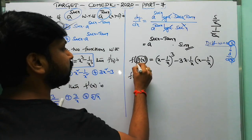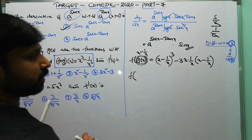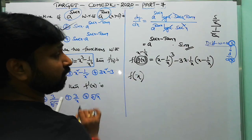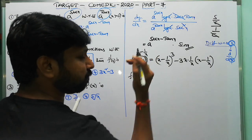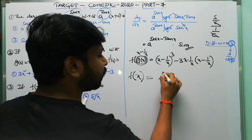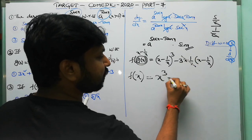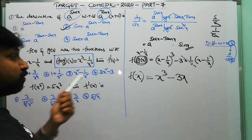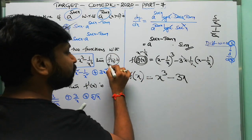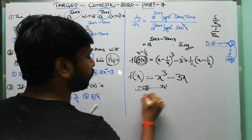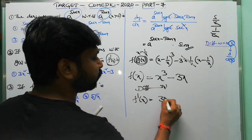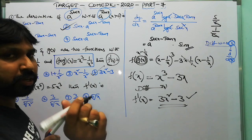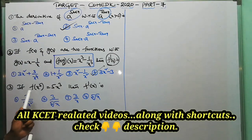Since g(x) = x − 1/x, let u = x − 1/x. Then f(u) = u³ − 3u. So f(x) = x³ − 3x. Differentiating with respect to x: f'(x) = 3x² − 3. The fourth option is the correct answer.